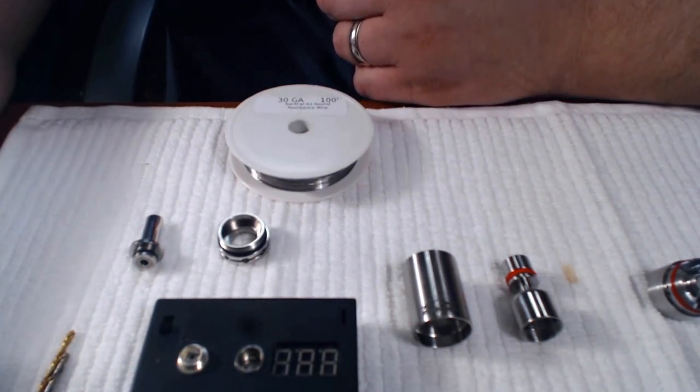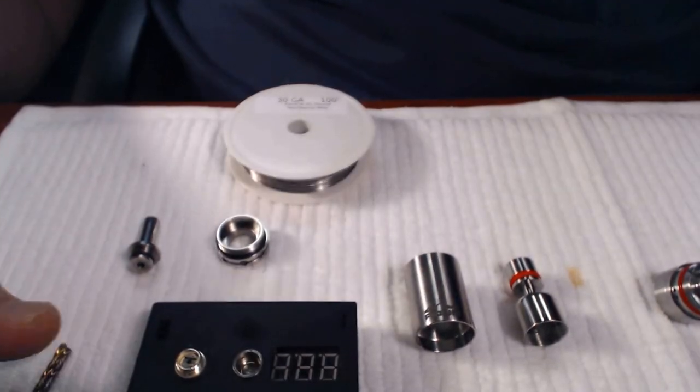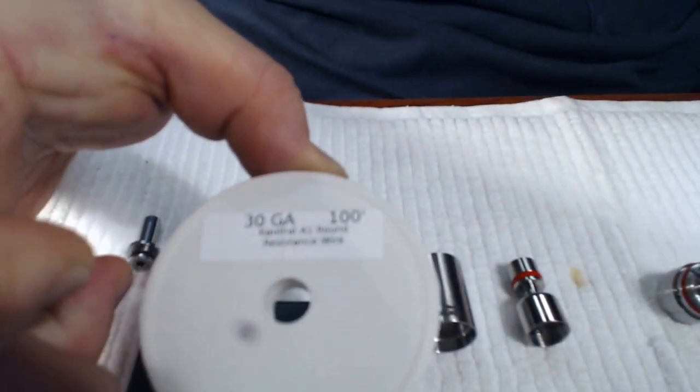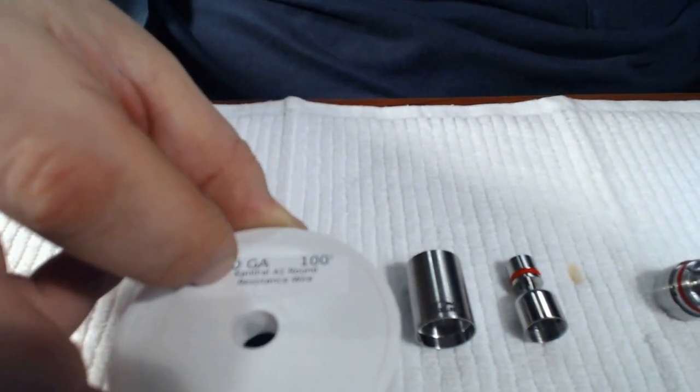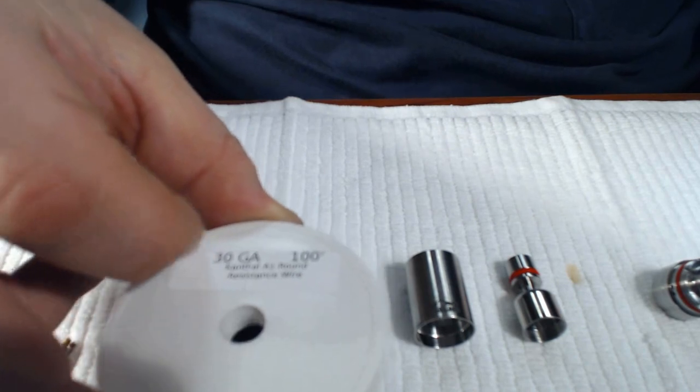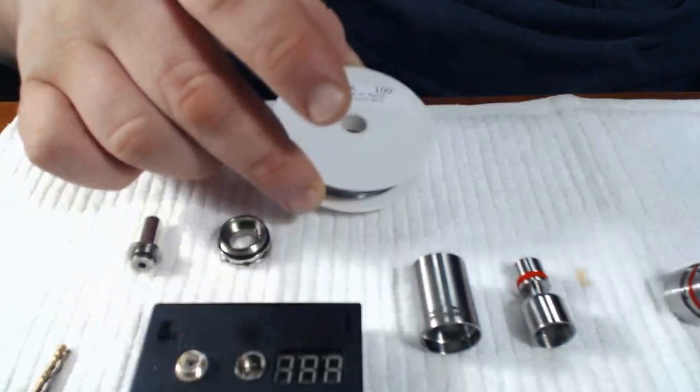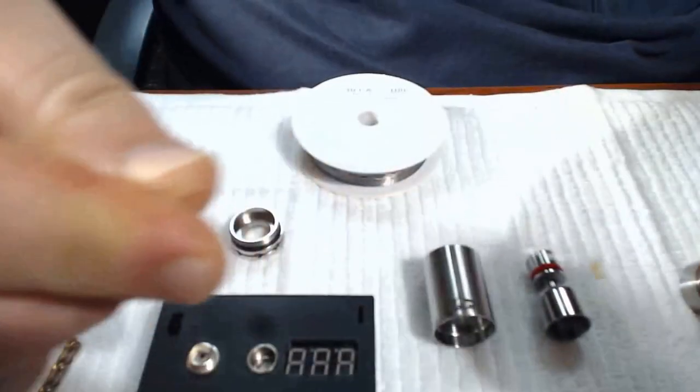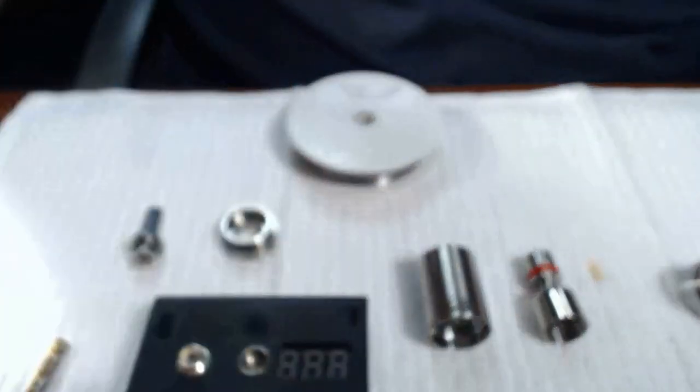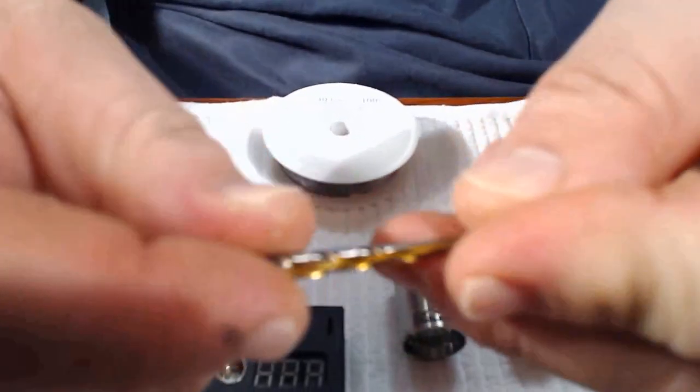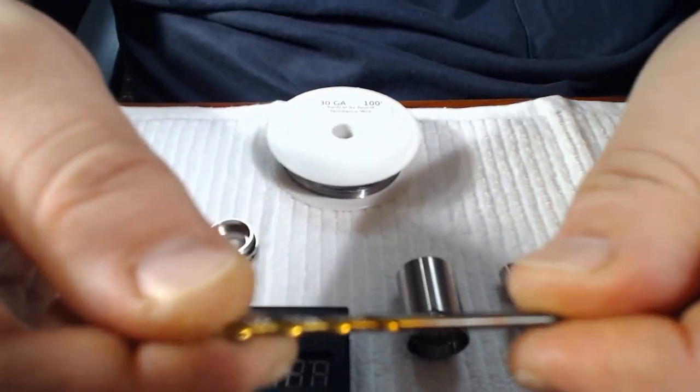The tools you are going to need to start this: we are going to use 30 gauge kanthal wire with a little bit higher resistance so I can use it on a variable voltage mod if I choose to. You're going to need two six to eight inch pieces of that.